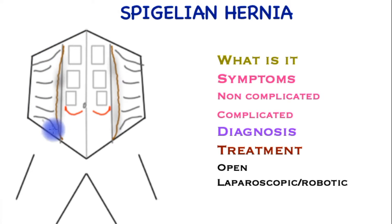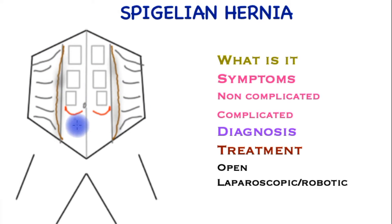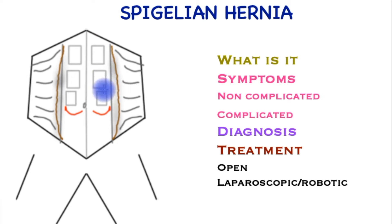In this cartoon of the abdomen, we can see the two central strap muscles called the rectus abdominis on either side. They have a covering, a very tough sheath at the front and at the back. However, the sheath at the back is deficient just below the midpoint of the muscles.